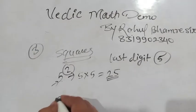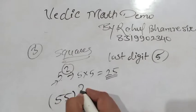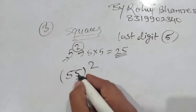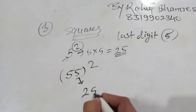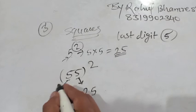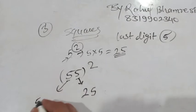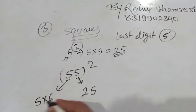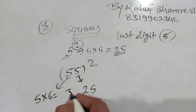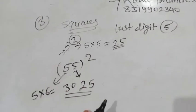We have to find square of 55. What we do? The last digit is 5. Then square of 5, 25. Then what we do? The 10th digit is 5. We have to take 5 and next is 6. 5 multiplied by 6 become 30. And that is your final answer.